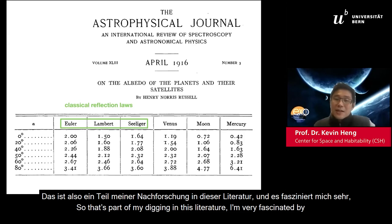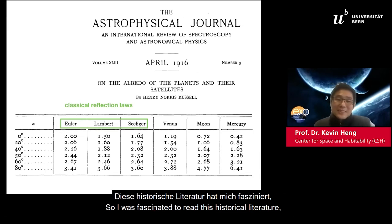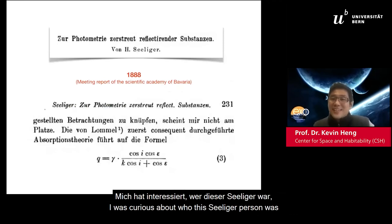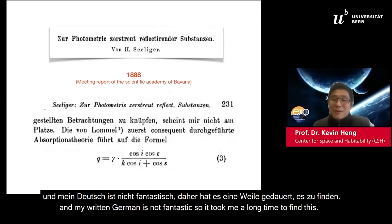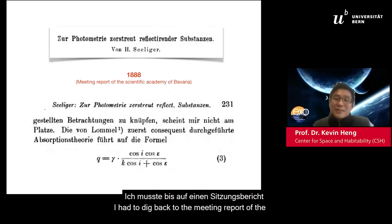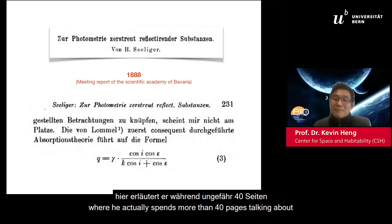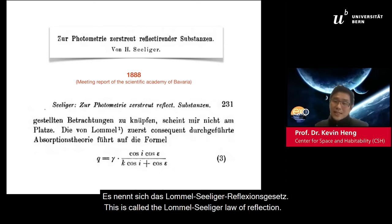As part of my digging into this literature, I'm very fascinated by how scientists centuries ago thought about problems. In my digging, I was curious about who this Seliger person was. Almost all of his papers are in German, and my written German is not fantastic, so it took me a long time. I had to dig back to a meeting report of the Scientific Academy of Bavaria in 1888 to find this, where he actually spends more than 40 pages talking about different laws of reflection. This eventually came to be named after him — the Lommel-Seliger law of reflection.